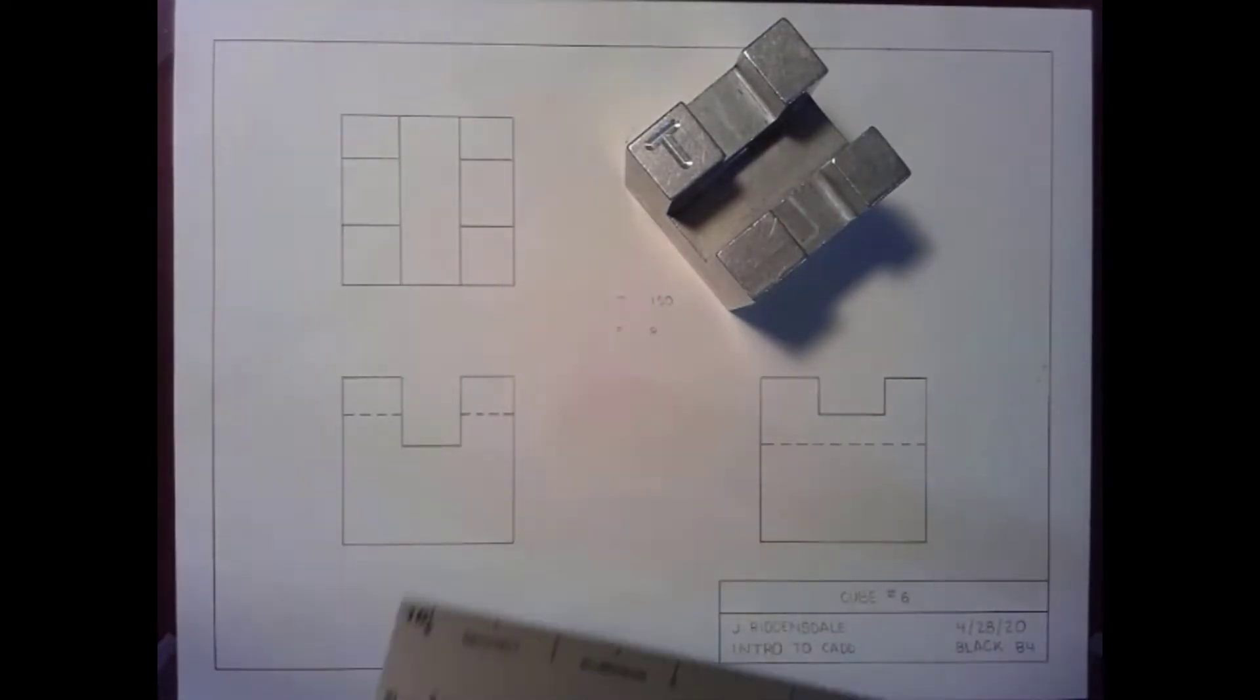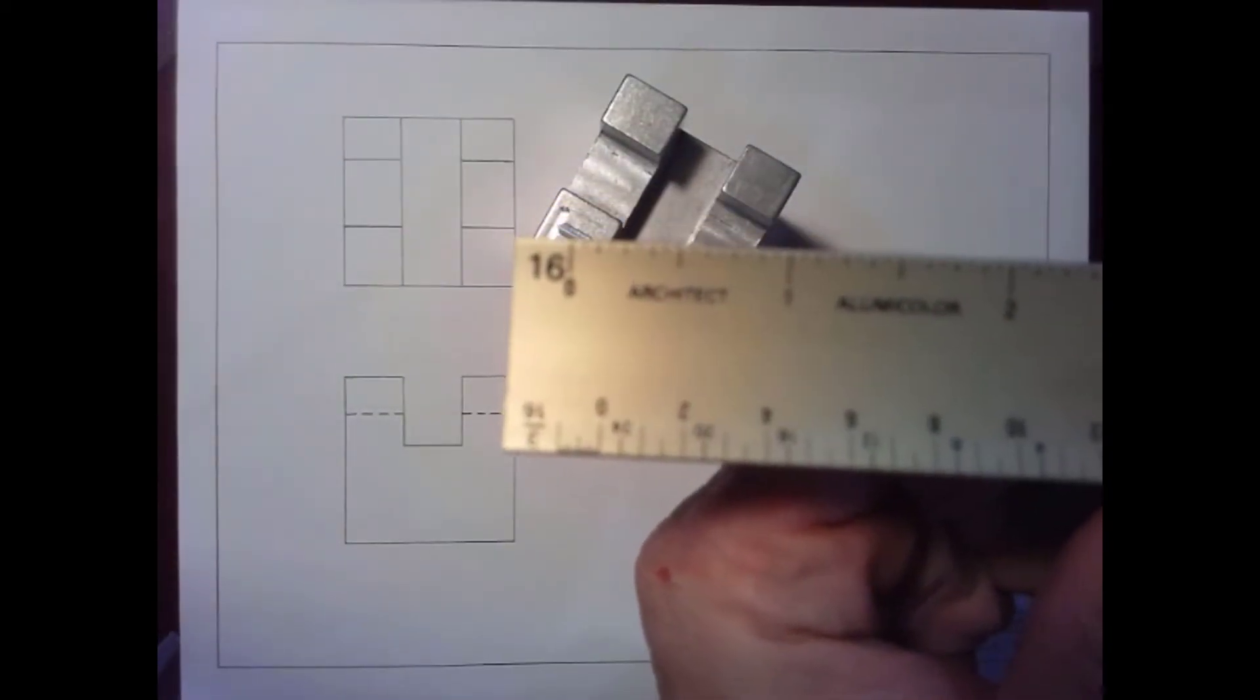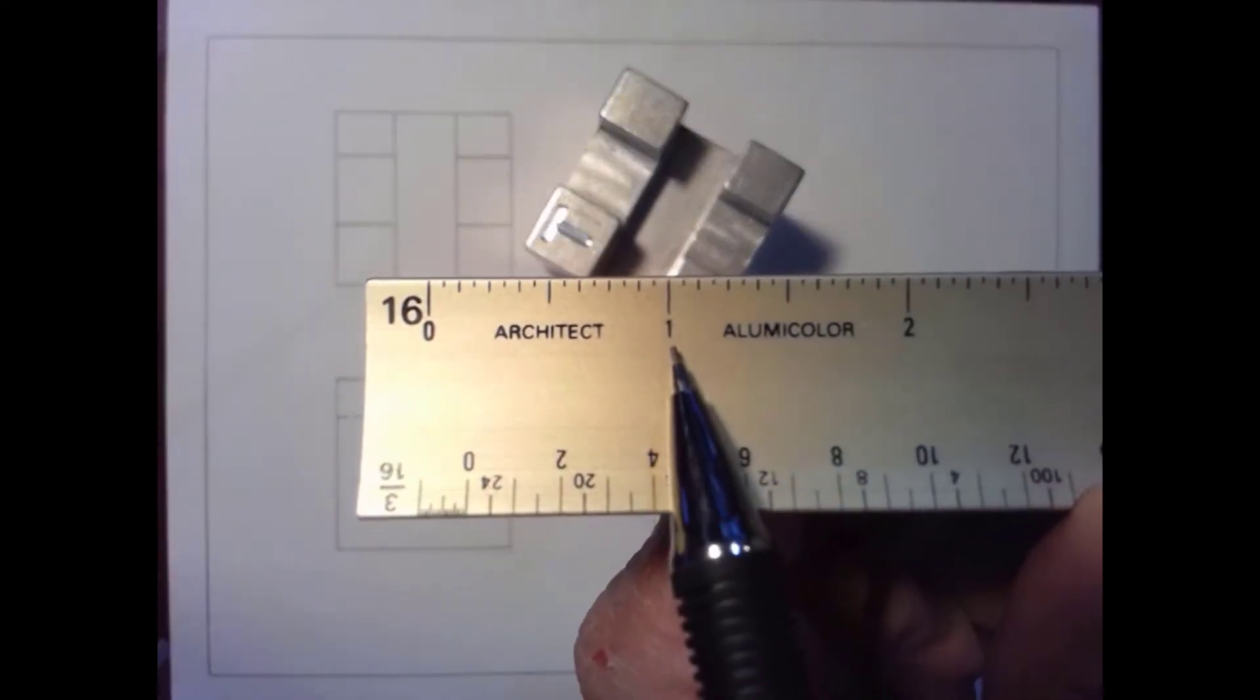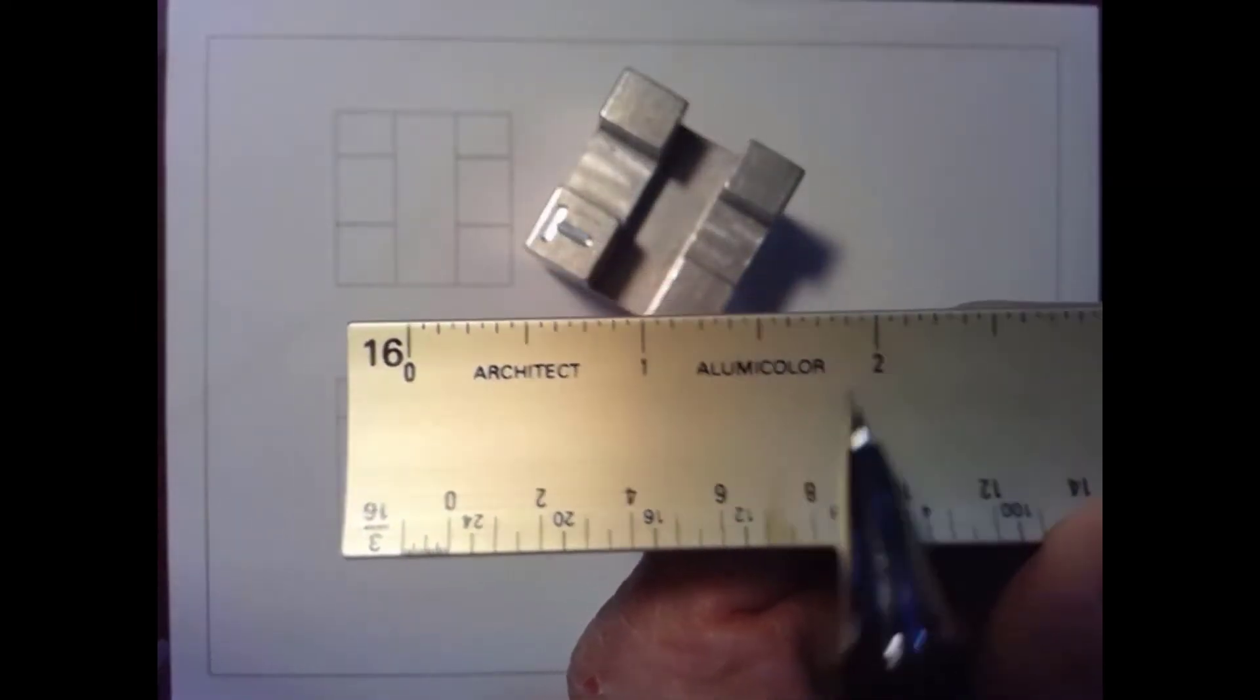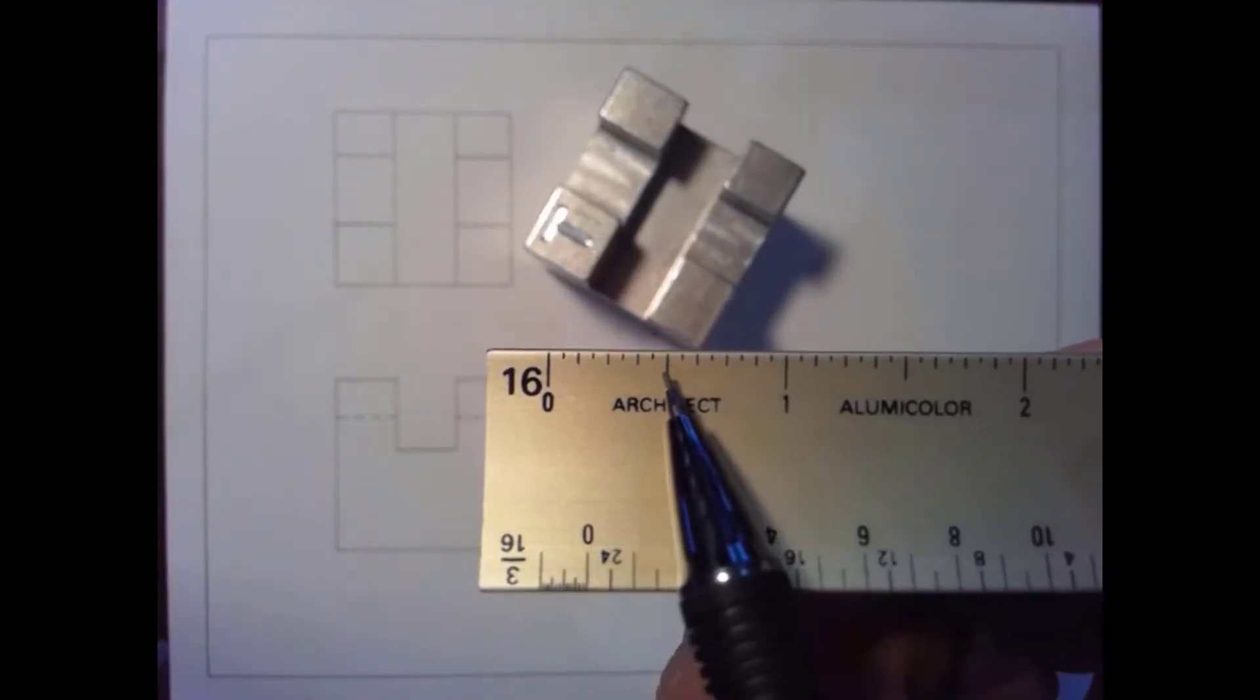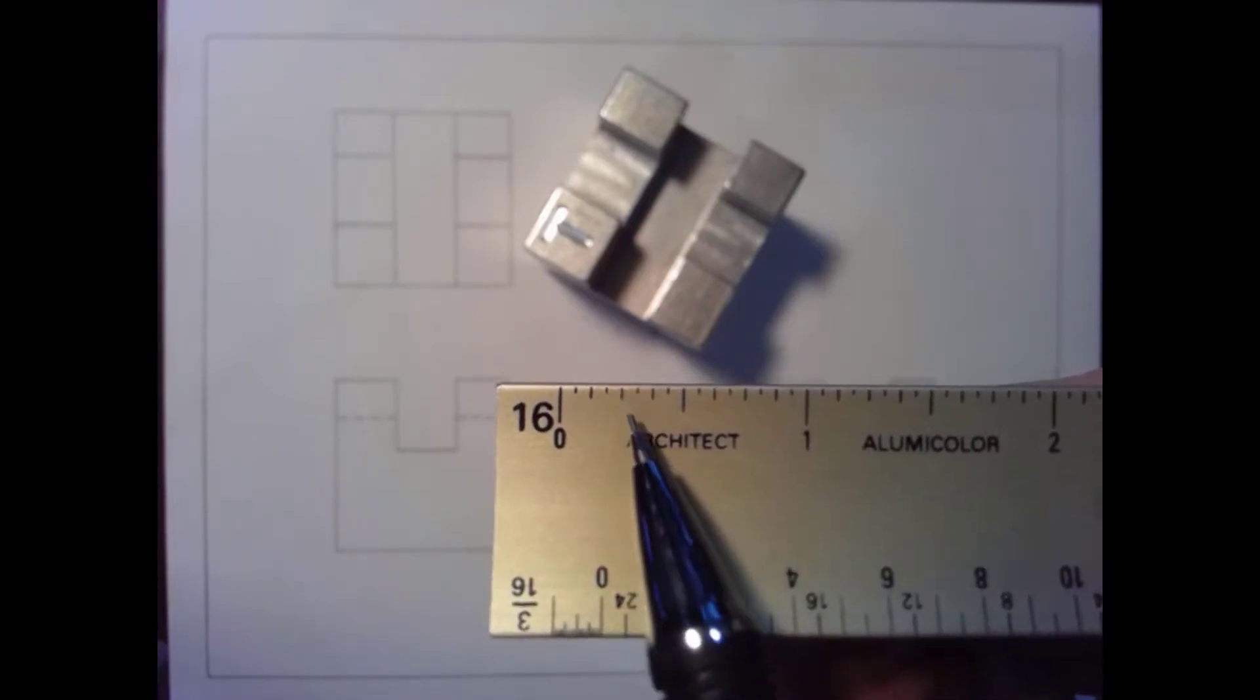The architectural ruler is broken down, like most modern rulers, into one inch segments. Each one inch segment is broken down further into half inch segments, quarter inch segments.